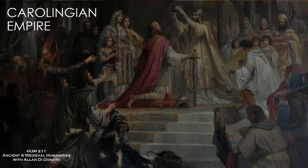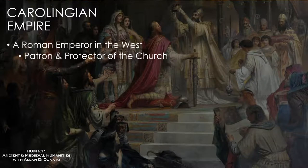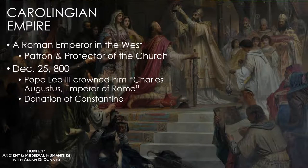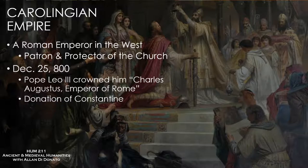Let's look at some of the other monumental contributions of Charlemagne besides his conquests. The empire became an empire for the first time because there was now an emperor. This took place on Christmas Day in the year 800, when Pope Leo III crowned Charles as Charles Augustus, Emperor of Rome, at St. Peter's in Rome, calling on the authority of the Donation of Constantine. The Pope placed the crown on Charlemagne's head — supposedly Charlemagne wasn't aware this was going to happen, though some historians are skeptical.